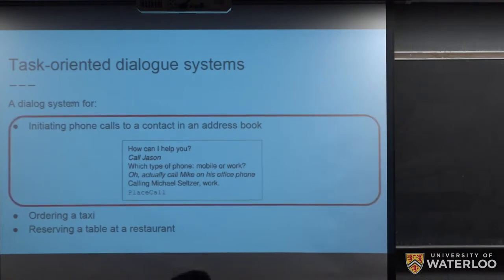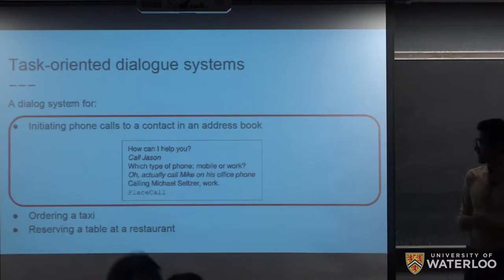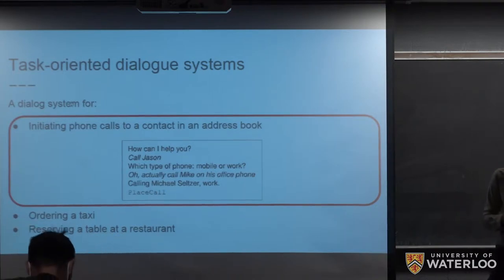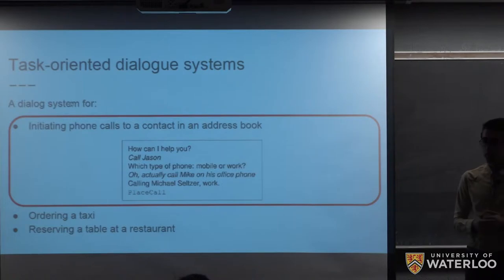Other examples could be ordering a taxi or reserving a table at a restaurant. The authors of this paper used the first example, in fact, the dialogue system in the first example, to test their model. In their setting, a contact's name may have some synonyms like Mike and Michael, and a user may have more than one phone number. I will explain the experimental results in the following slides in more details.